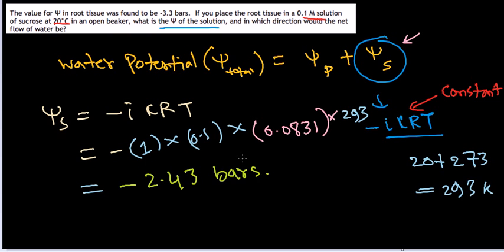Once we get the value of minus 2.43 bars, the value for psi in the root tissue was given as minus 3.3. The solute potential, the psi of the solution, will be minus 2.43 bars and that is the correct answer.